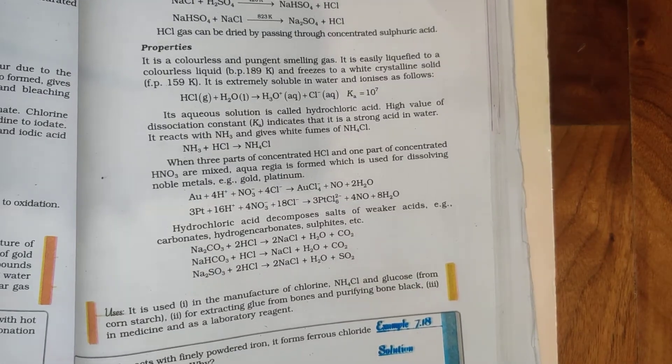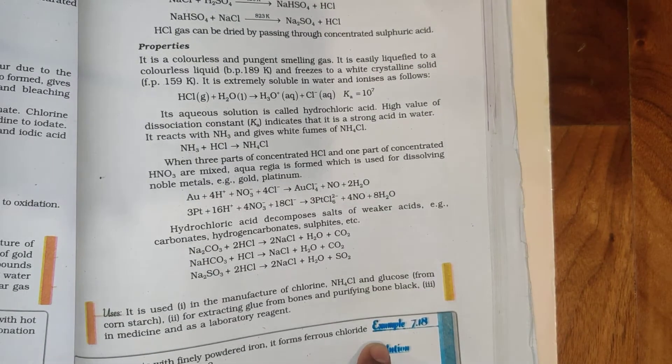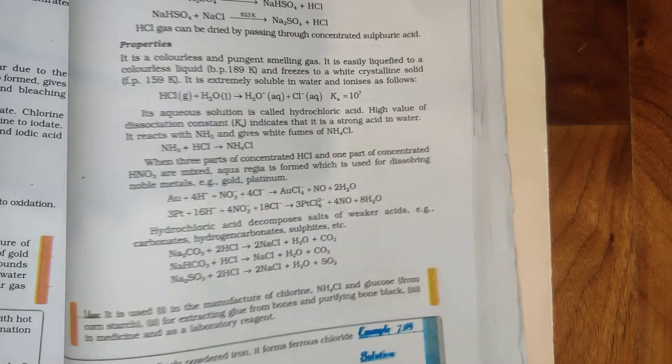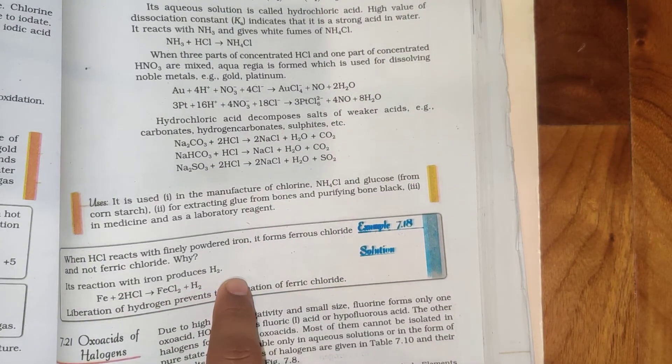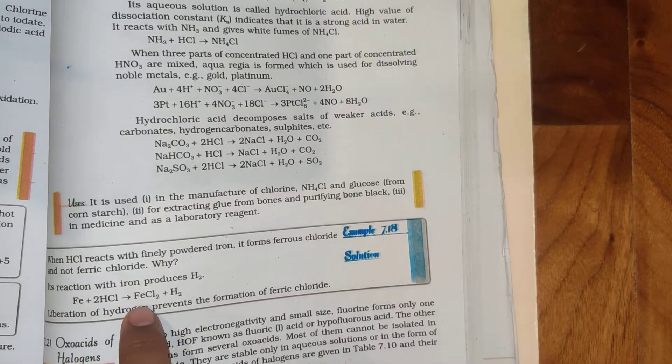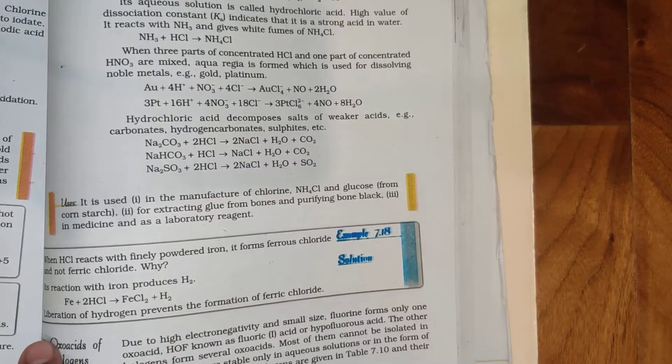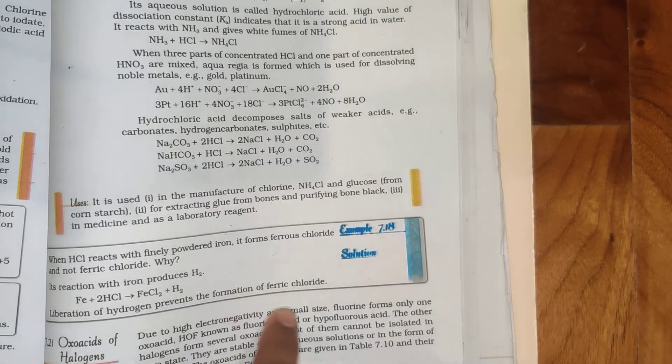When HCl reacts with finely powdered iron, it forms ferrous chloride and not ferric chloride. Why? Its reaction with iron produces H2. Fe plus 2HCl gives FeCl2 plus H2. Liberation of hydrogen prevents the formation of ferric chloride.